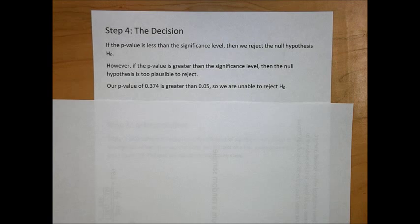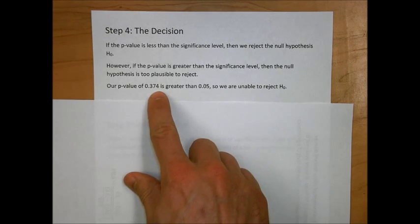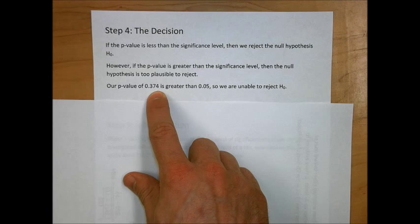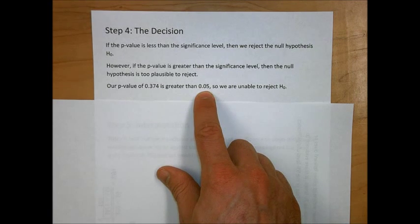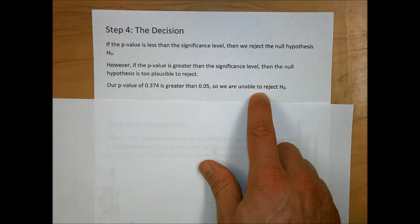Recall from step four that if the p-value is greater than the significance level, then the null hypothesis is too plausible to reject. Our p-value of .374 is greater than .05, our significance level, so we are unable to reject the null hypothesis.